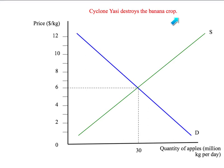But in this example, we're not going to think about the price of bananas directly. We're going to ask the simple question: What happened to the price of apples when Cyclone Yasi destroyed the banana crop? Now, before Cyclone Yasi, the price of apples, let's say, was about $6 per kilogram. That was our equilibrium price, or our predicted price, and there were about 30 million kilograms of apples sold each day in Australia.